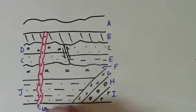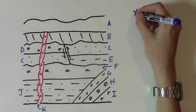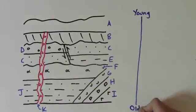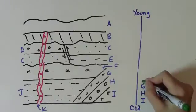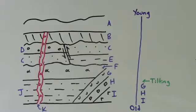First, we had I, H, and G deposited, followed by a tilting event. Then, J and F were deposited, followed by erosion.